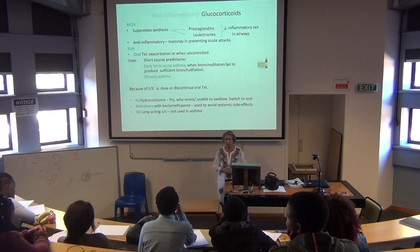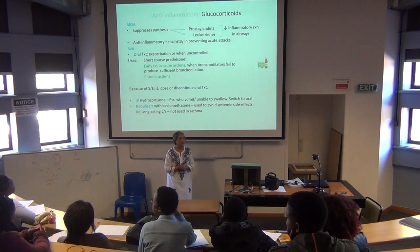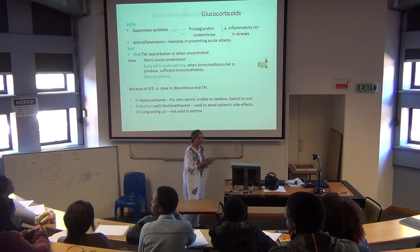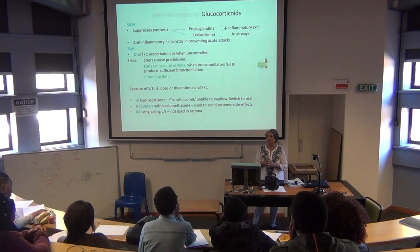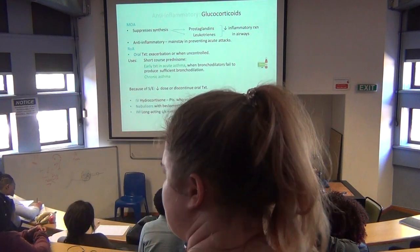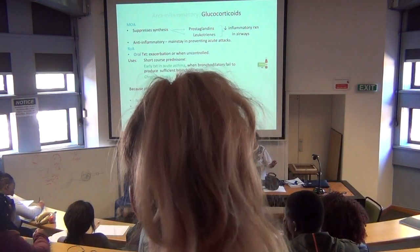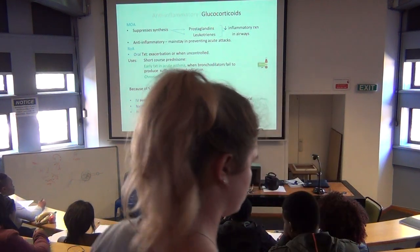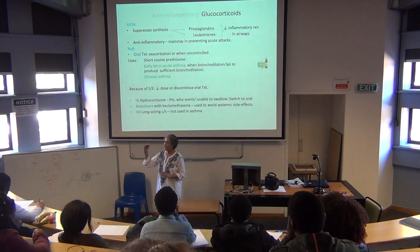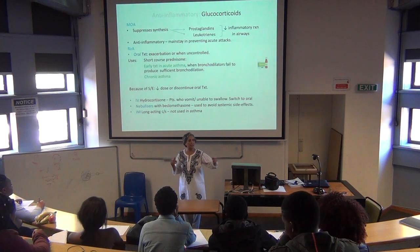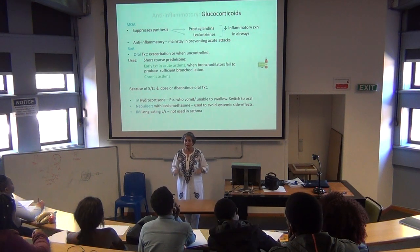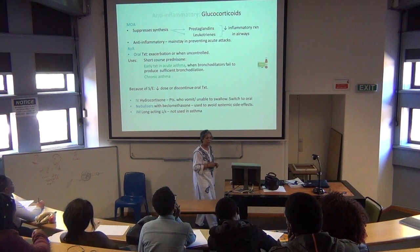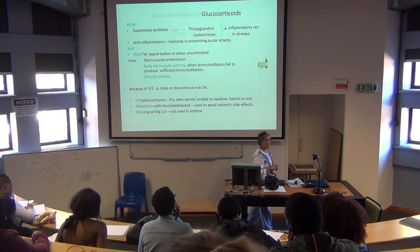Let's look at how anti-inflammatories work. We said that they suppress the inflammatory mediators. The main ones they target are prostaglandins and leukotrienes. You saw the cascade of inflammatory mediators that are released last week, and prostaglandins and leukotrienes are just some of them. The anti-inflammatories suppress the synthesis of these mediators.